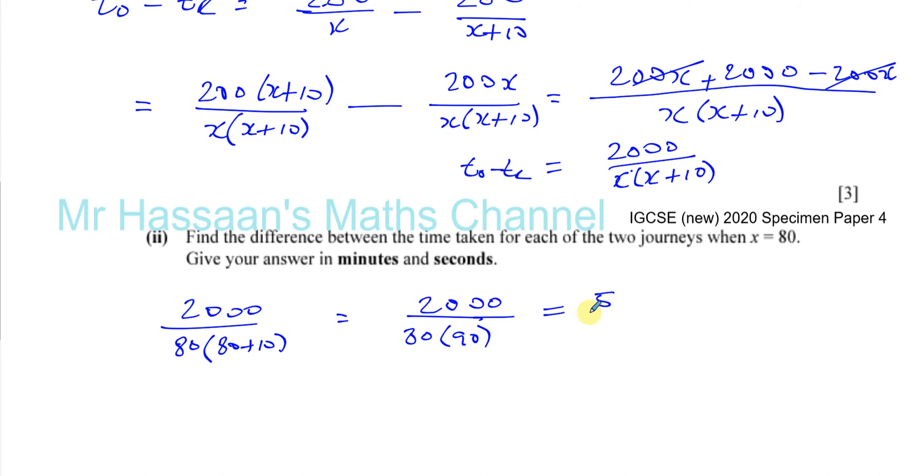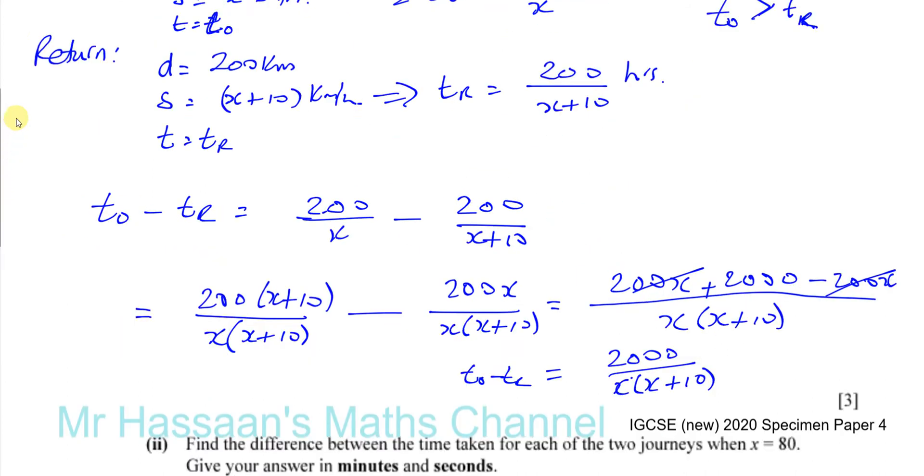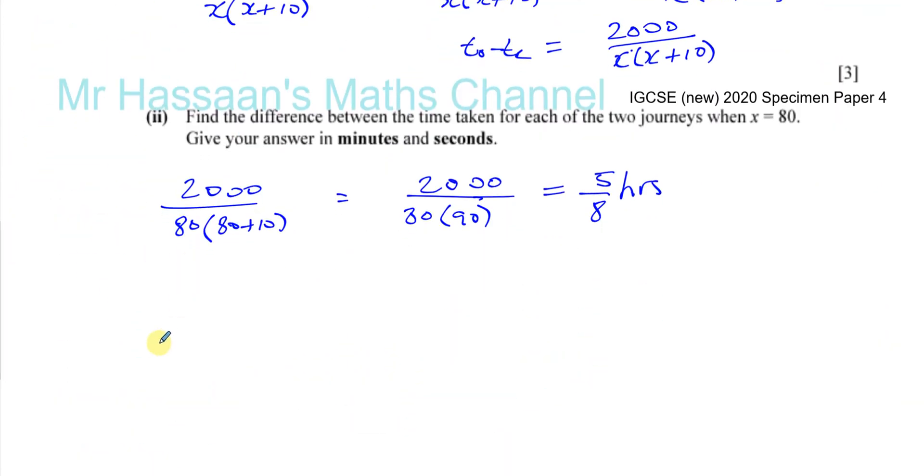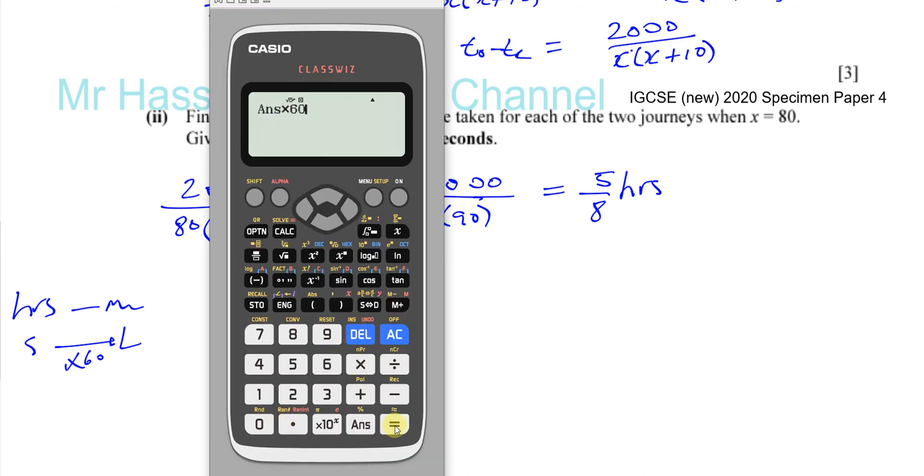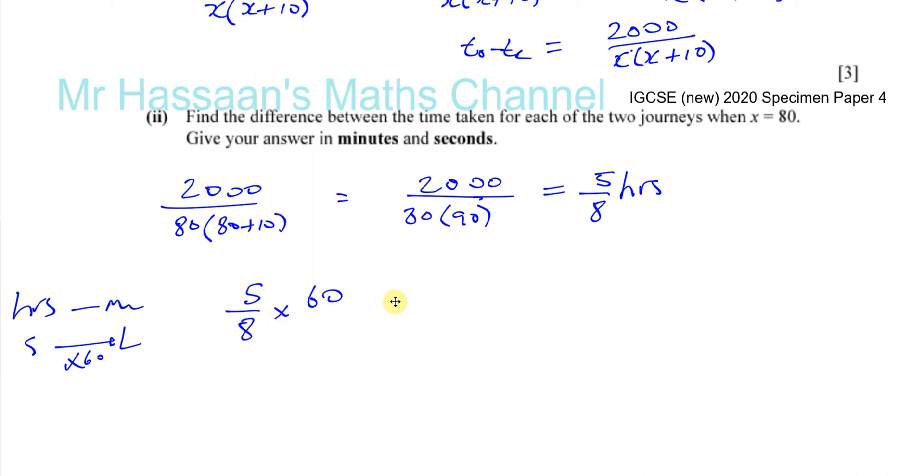So I'll leave it as a fraction for now. And we've got to convert the answer into minutes and seconds. So this is in hours because our answer here was in hours. We had kilometers per hour and we had kilometers, so the answer was in hours for the time. So we've got to convert 5 eighteenths hours into minutes and seconds. To convert it into minutes, we multiply by 60. How many minutes in an hour? 60. So we take this fraction and we multiply it by 60, and we get 50 over 3, which is 16 and 2 thirds.